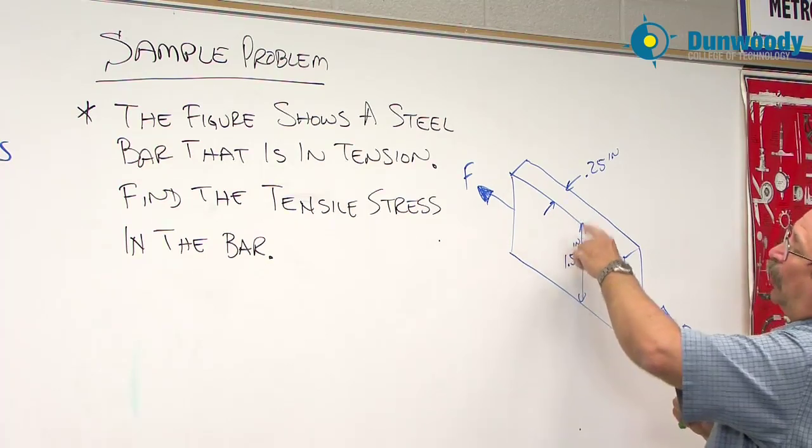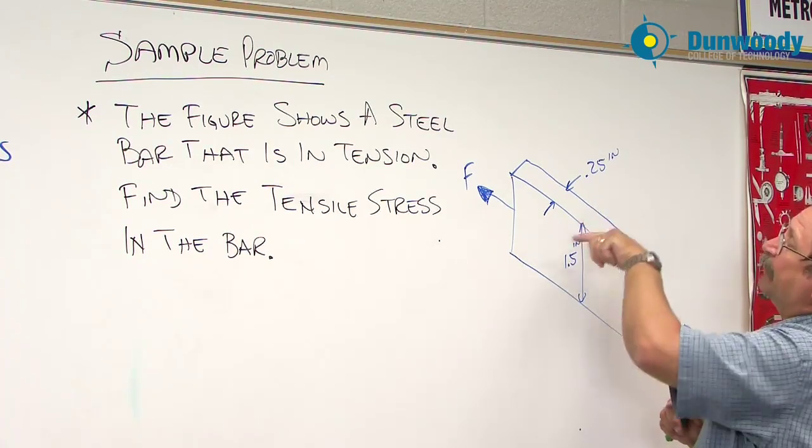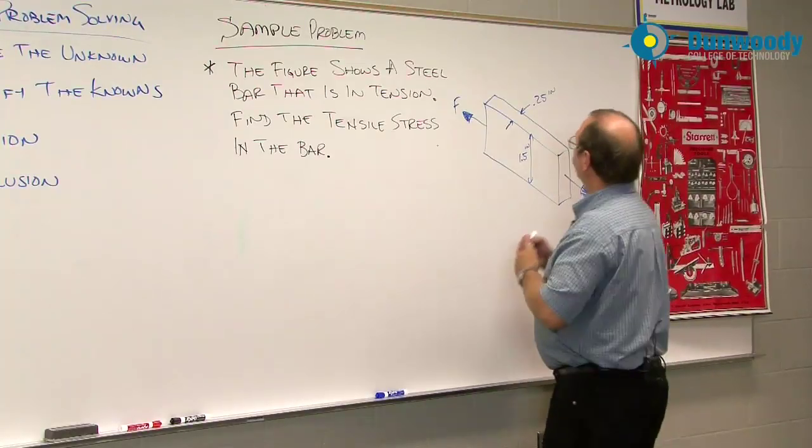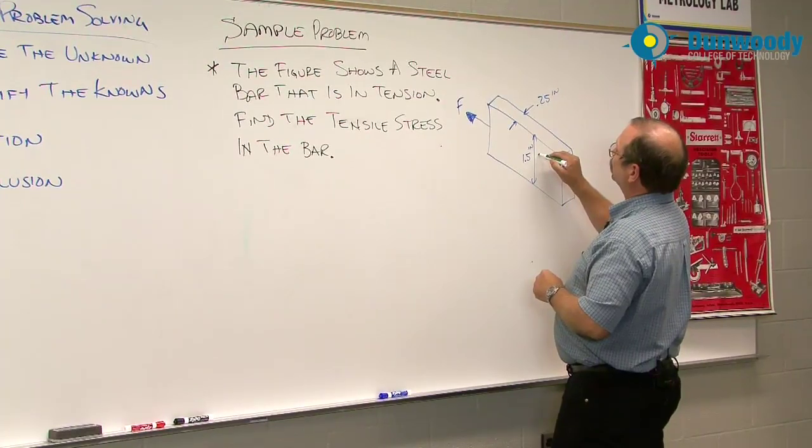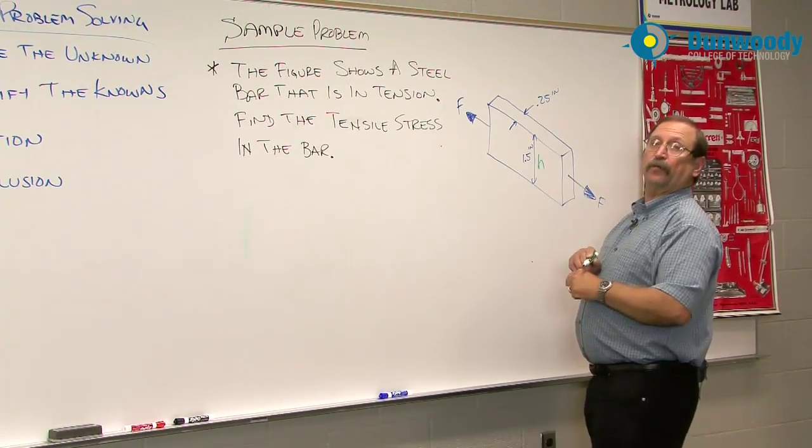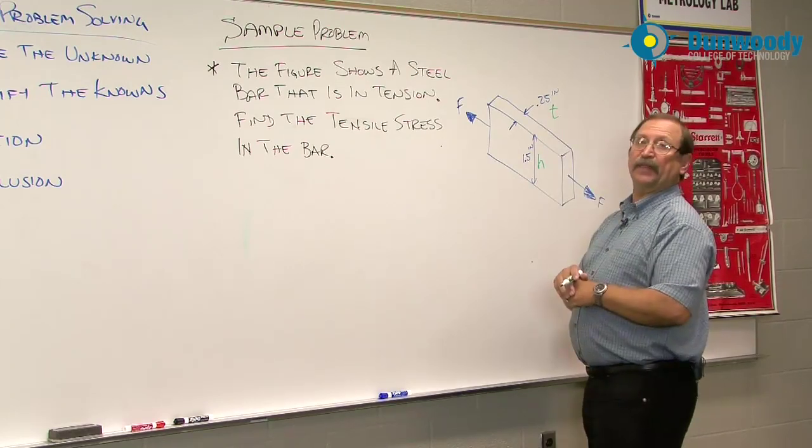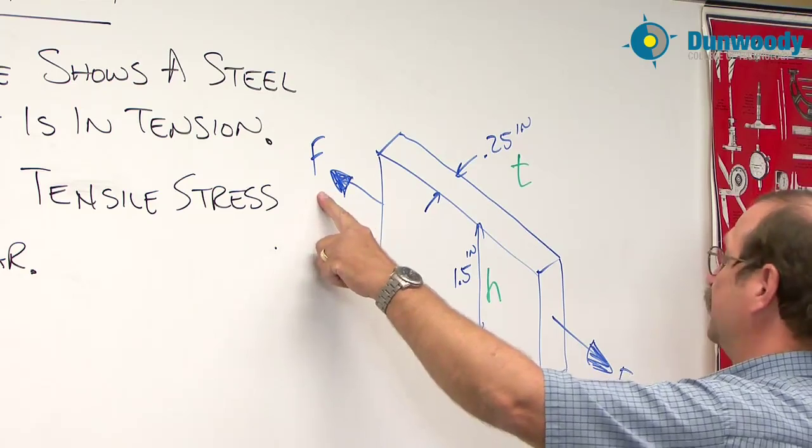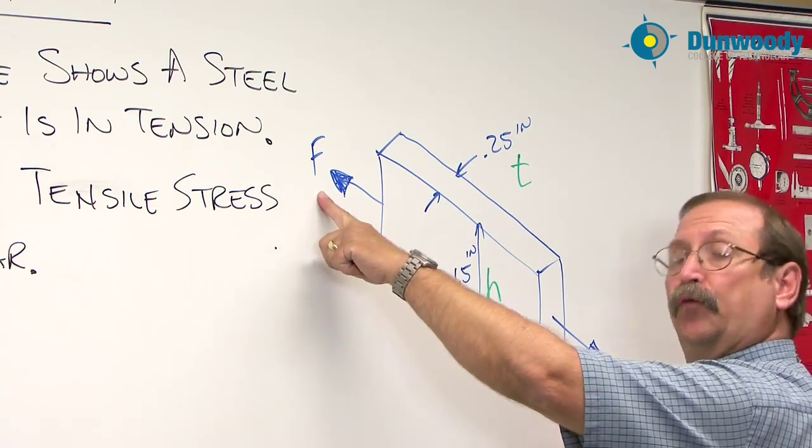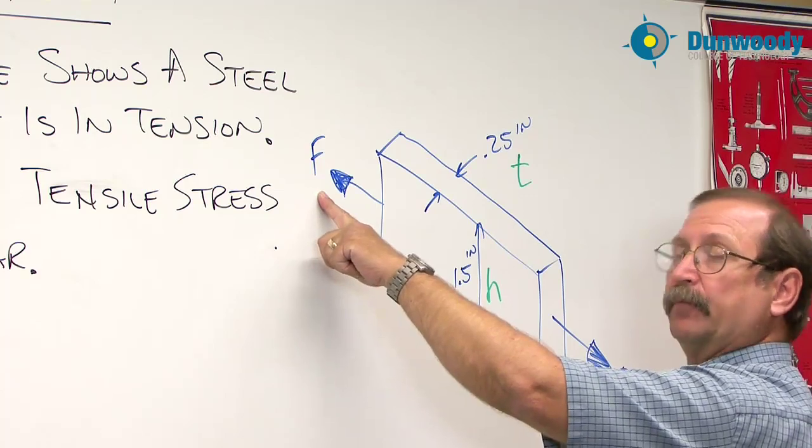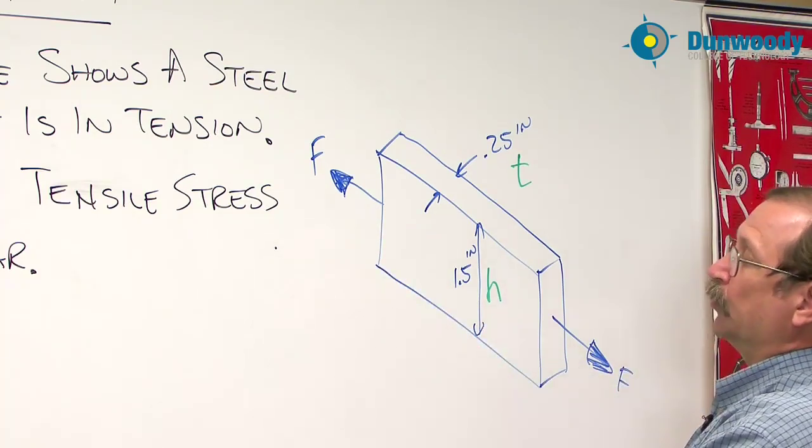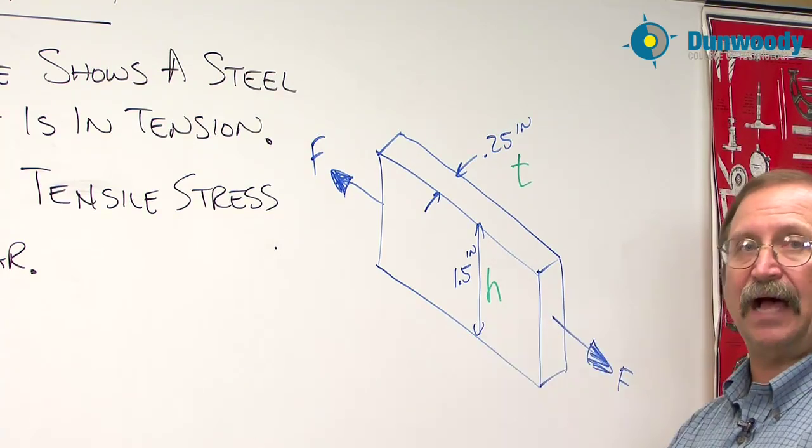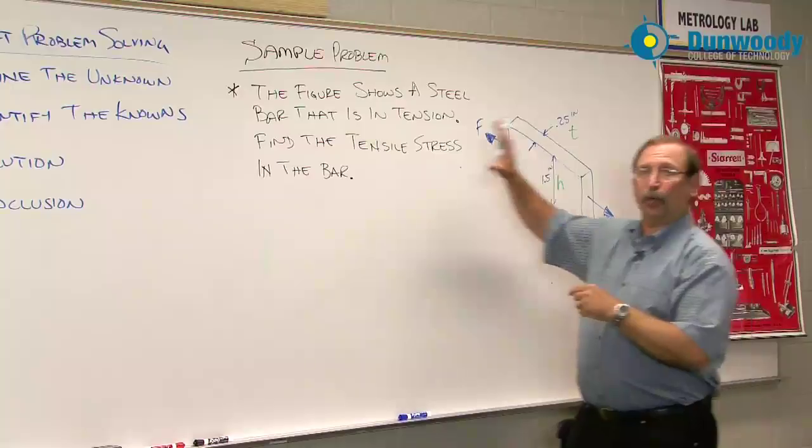This bar has some unknown length, doesn't really matter for what we're doing. We have a one and a half inch height and a quarter inch thickness. If we come in here and put in some units, we can say that this is an H for height and this will be our T for thickness. Then this bar is in tension so we have the force arrows pointing outward. This is a two-force member if you remember that from last course. We're putting tensile force in this object.